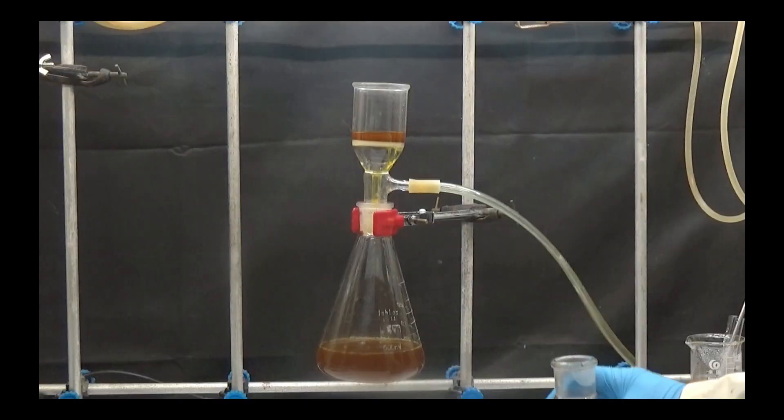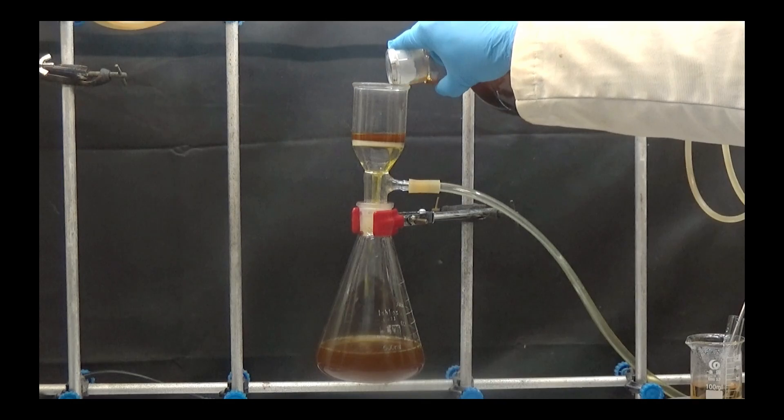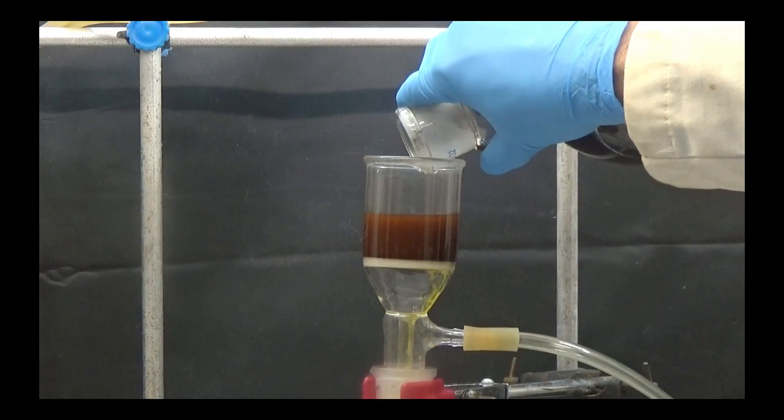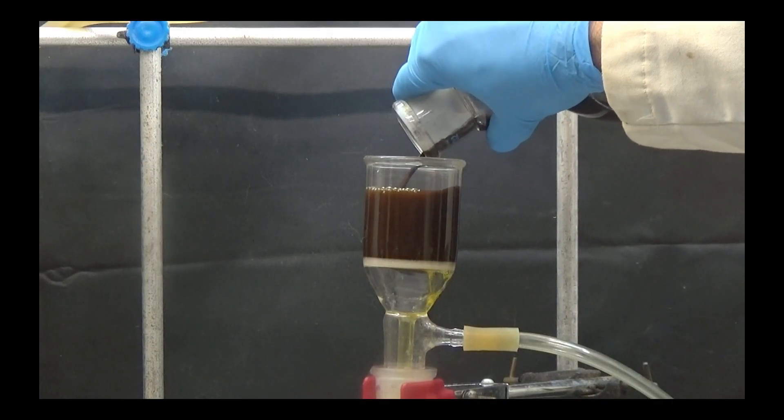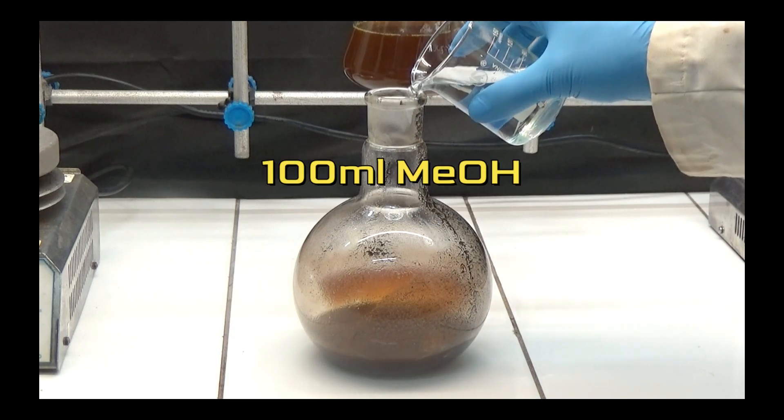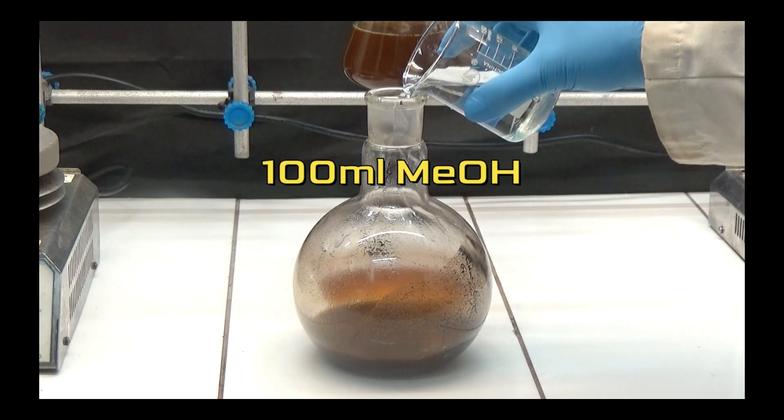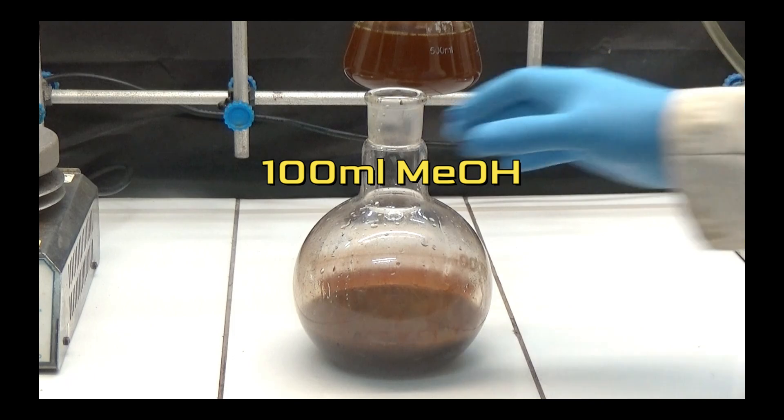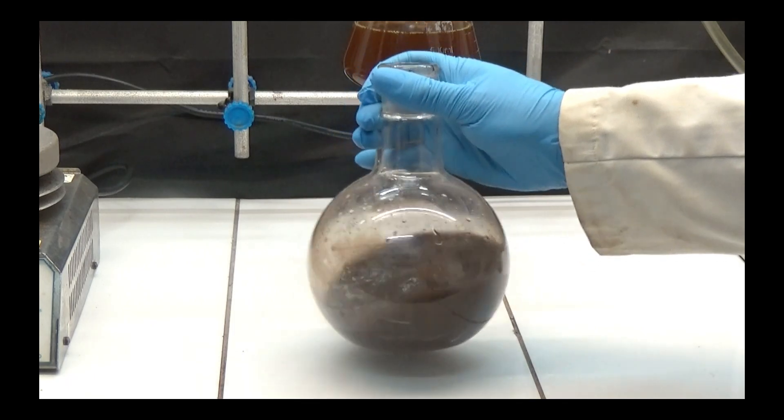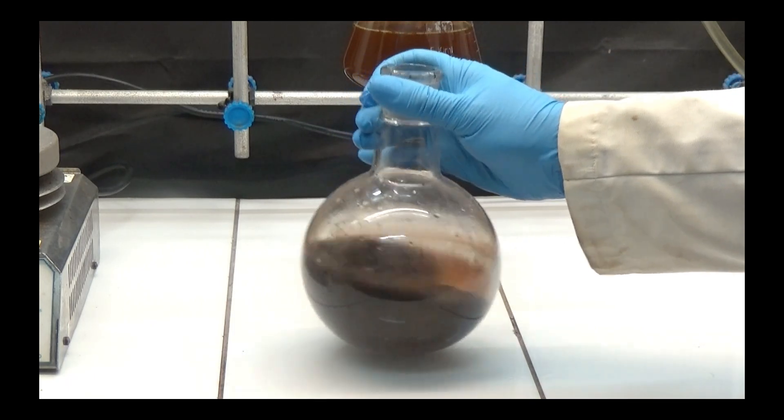Allow it to cool and separate the insoluble iron through filtration. Clean the iron powder using 100 milliliters of methanol. Iron is pyrophoric when dry, so it needs to be kept moist and disposed of properly.